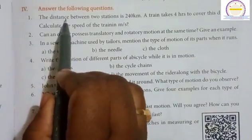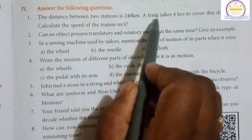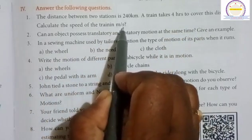First question: The distance between two stations is 240 kilometers. A train takes four hours to cover this distance. Calculate the speed of the train in meters per second.